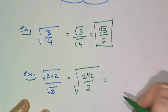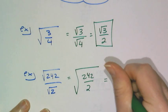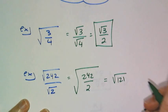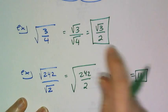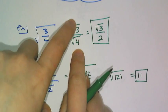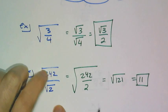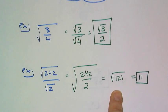Because 242 divided by 2 is 121, so the square root of 121 is 11. So the property, I can use it to split up a fraction, or I can put the fraction back together and simplify it. And which one you choose depends on the problem you're given.